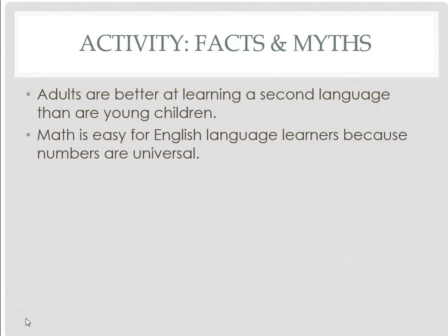Fact or myth: math isn't easy for an English language learner because numbers are universal? That is also a myth. Math involves more than just numbers — it includes vocabulary terms such as numerator, quotient, and simplify. Furthermore, words like 'table' and 'round' have meanings in math different from their more common definitions. It's also important to remember that the use of measurement systems like the metric system is not universal, and not all countries use Arabic numerals. So it will not be a simple task for an English language learner simply because numbers are involved.